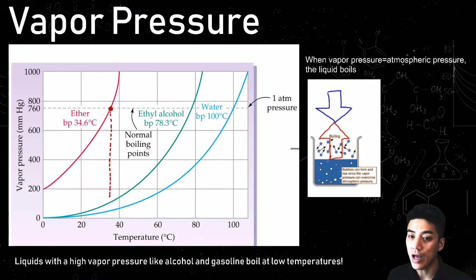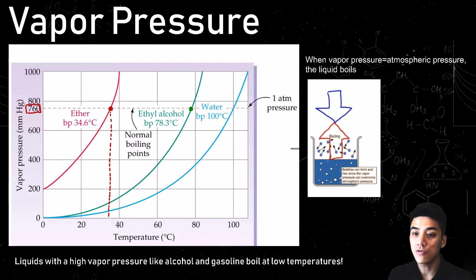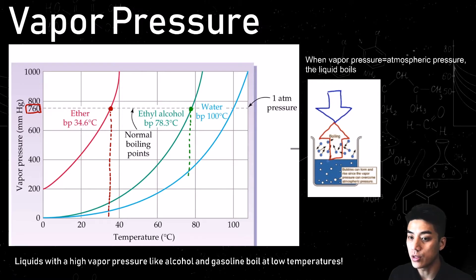Ether will boil at 34.6 degrees Celsius — almost like human body temperature, it just becomes a gas, so it's highly volatile. Remember, vapor pressure is the upwards pushing force, and if it's equal to atmospheric pressure, which is the downwards pushing force, then the liquid will boil. In ethanol's case, it's going to boil at 78 degrees, where the vapor pressure is 760 millimeters of mercury.